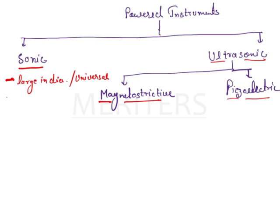The tip has an orbital type of vibrating action. Sonic and ultrasonic instruments work on vibration, and here the vibration is basically orbital type. The vibration range for sonic instruments is around 2,000 to 6,500 cycles per second. These are the important points about the sonic instrument.